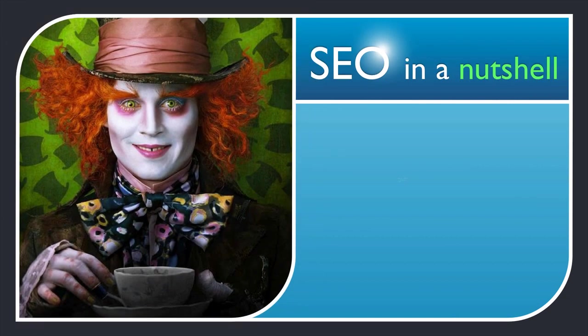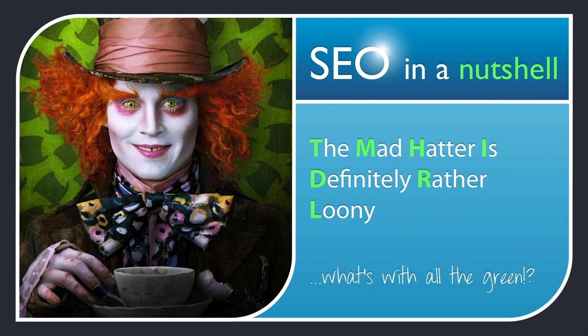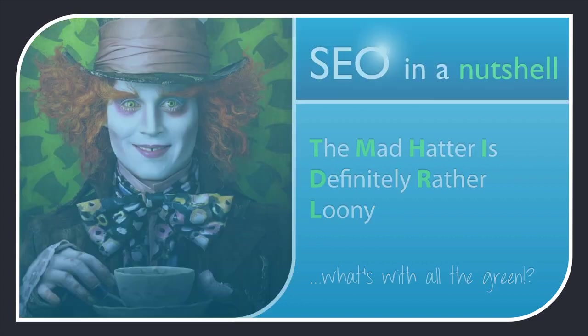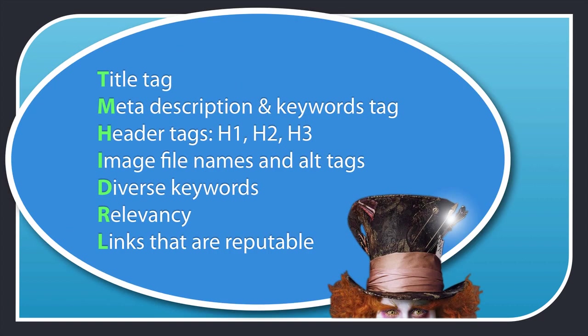Take a look at this image. We haven't gone mad at WordTracker. Each of these letters in bold stands for the steps you need to take to SEO your page. The caption reads: The mad hatter is definitely rather loony. T is for title tag. M is for meta description and keywords tag. H is for header tags. I is for image file names and alt tags. D is for diverse keywords. R is for relevancy. And L is for reputable links. That's everything you need to know to SEO your page.